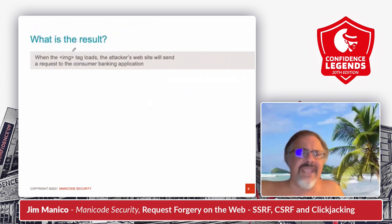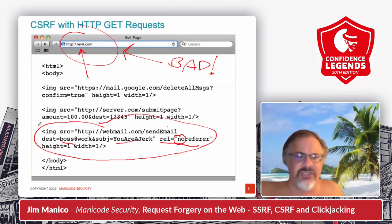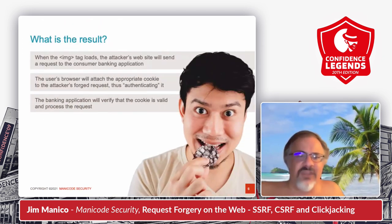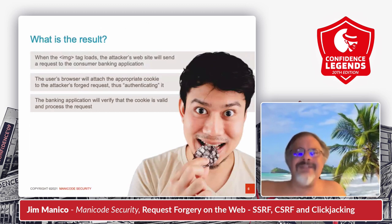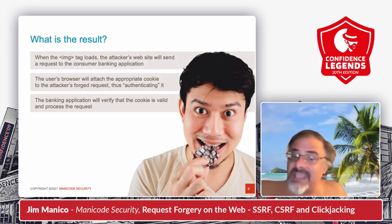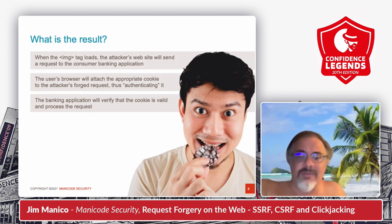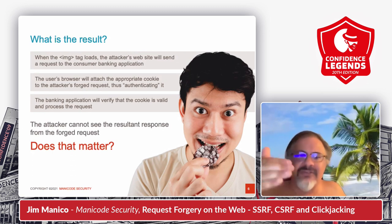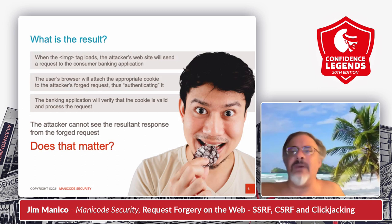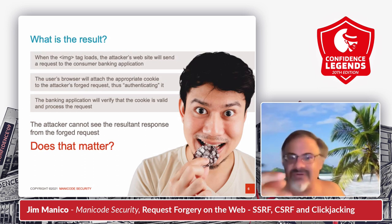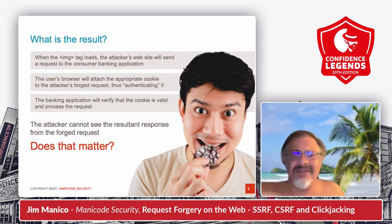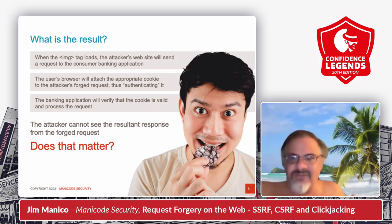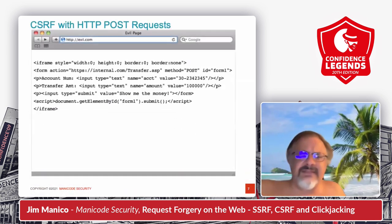What's the result here? When the image loads, a GET request is made to the banking application. If the user is logged into the bank and the cookie is valid, that cookie is going to be sent automatically. The user is authenticated. Now the attacker does not see the response — the attack launches in the browser of the victim. Does it matter that the attacker doesn't see the response? No. The attacker gets the result of this attack — they get the money, they get the message sent maliciously.